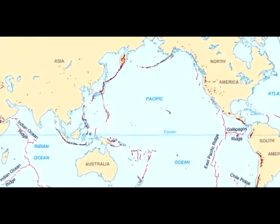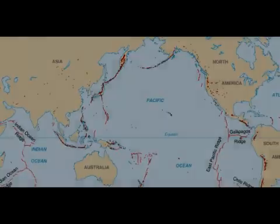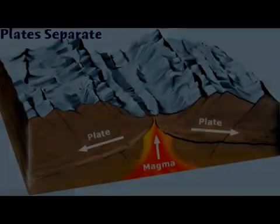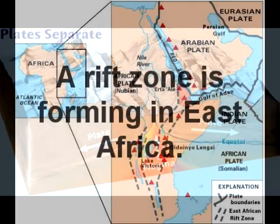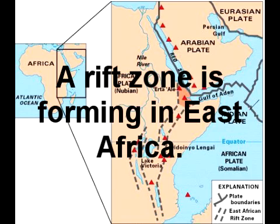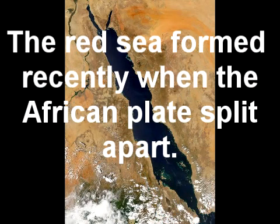But why are these features associated with plate boundaries? Mid-ocean ridges are formed from two plates moving apart, creating new seafloor. When this divergent boundary is on a continent, a rift zone with increased geologic activity is formed. Eventually the continent will break apart, creating a small sea, and over millions of years, an ocean.